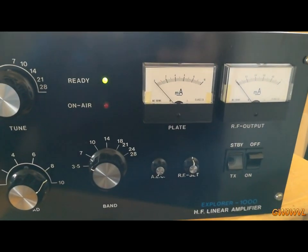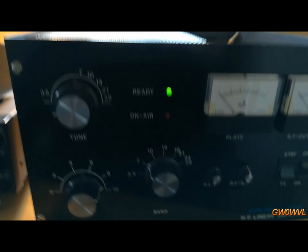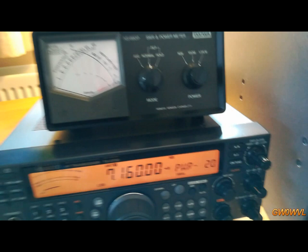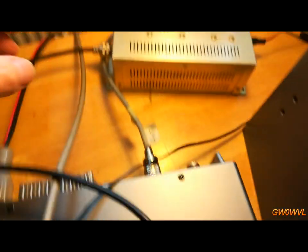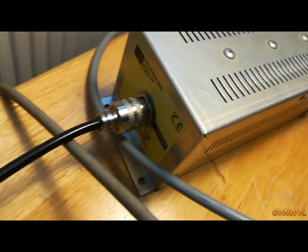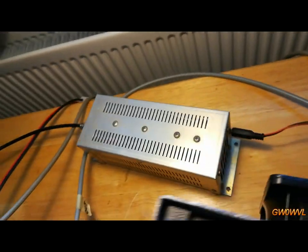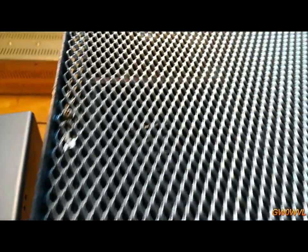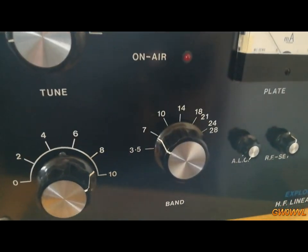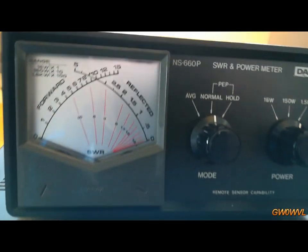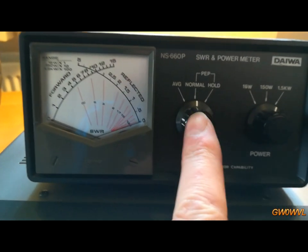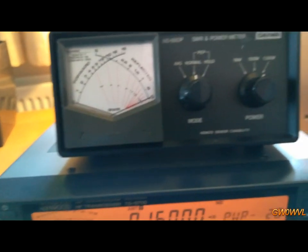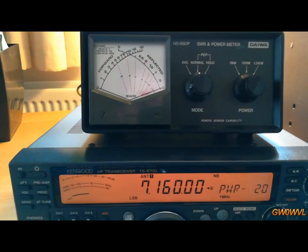So the amplifier is almost back together. Just the cases to put on, or the lid and the bottom panel. So we've got it rigged up here. We're into a Palstar 1500 watt fan cooled dummy load. The amplifier is on and tuned. We are on 40 meters with 20 watts on the normal range on the 1.5 kilowatt scale. So 20 watts going in.